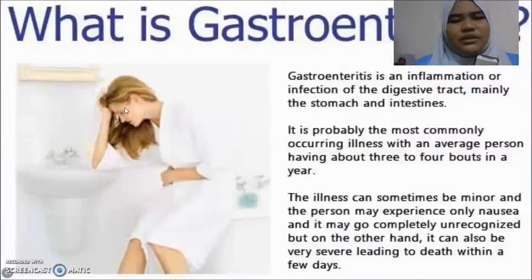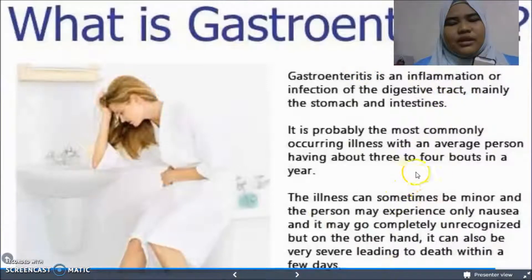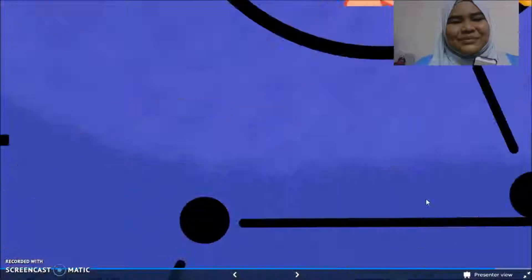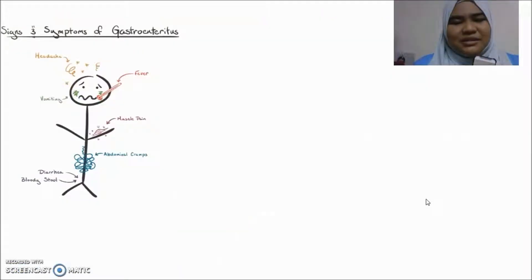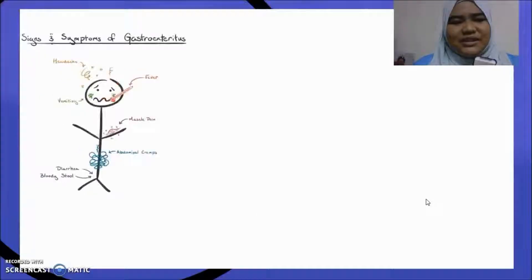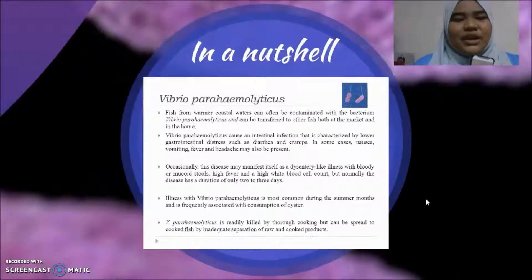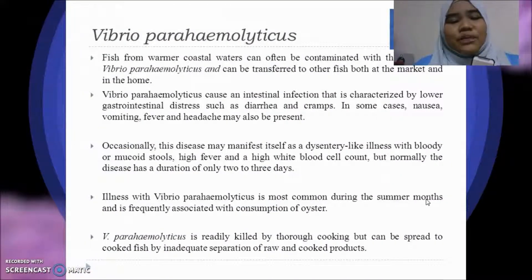So, what is gastroenteritis? Vibrio parahaemolyticus is an amazing pathogen associated with seafood consumption and its effect on humans in terms of pathogenesis and prevalence. Okay, thank you.